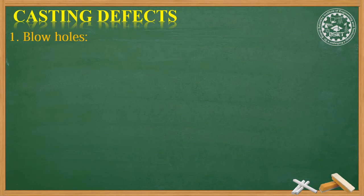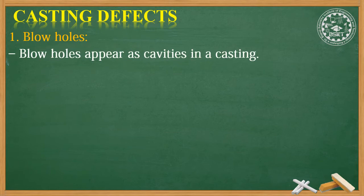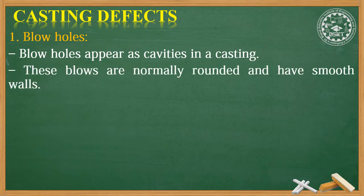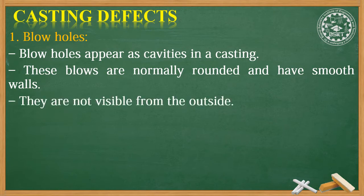The first casting defect is blowholes. Blowholes appear as cavities in casting. These blowholes are normally rounded and have smooth walls. They are not visible from the outside.